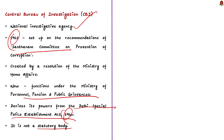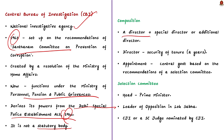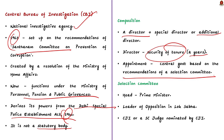The CBI is headed by a Director, assisted by a Special Director or an Additional Director. The Director of CBI is responsible for the administration of the organization and has been provided security of tenure for two years. The CBI Director is appointed by the Central Government based on the recommendation of a selection committee headed by the Prime Minister. Other members include the Leader of Opposition in the Lok Sabha and the Chief Justice of India or a Supreme Court judge nominated by the CJI.